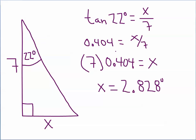Does that make any sense? Yes — the shortest side is going to be opposite the smallest angle. 22 degrees is my smallest angle, and the other angle would be 68 degrees, so this would be the next largest side, and 90 degrees is opposite the longest side, the hypotenuse.